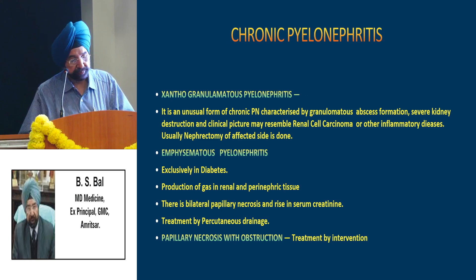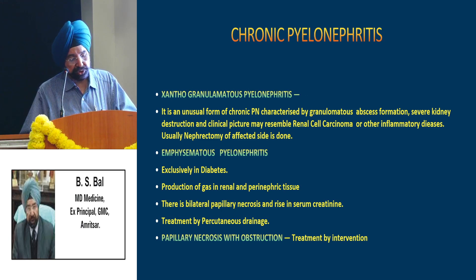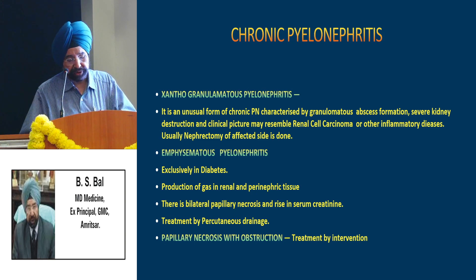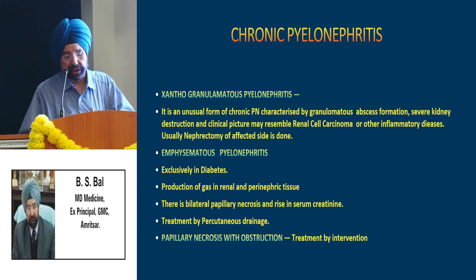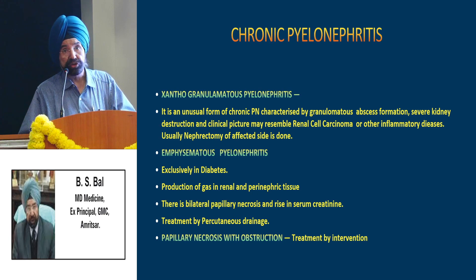Chronic pyelonephritis has certain types. Xanthogranulomatous pyelonephritis is an unusual form of chronic pyelonephritis characterized by granulomatous abscess formation, severe kidney destruction, and a clinical picture which may resemble renal cell carcinoma or other inflammatory diseases. Usually nephrectomy of the affected side is performed.